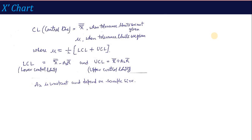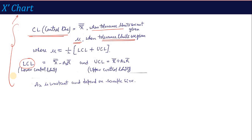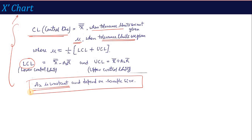For the x-bar chart: the center line is calculated by x-double-bar when specification limits are not given, and it equals mu when tolerance limits are given. The lower control limit is x-double-bar minus A2 times R-bar, and the upper control limit is x-double-bar plus A2 times R-bar. Here, A2 is a constant that depends on sample size and will always be given in the question.